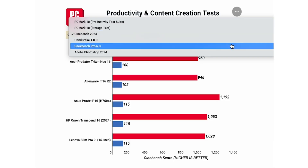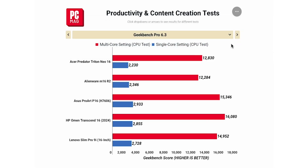Then we have Geekbench 6.3 Pro, another processor-focused test. It's a bit like PCMark10 in that it simulates a bunch of real-world applications, but here it's things like PDF rendering, speech recognition, and even machine learning. What's nice about Geekbench is that it's available for many different platforms, so we can easily compare Windows, macOS, and even Qualcomm Snapdragon ARM devices. Higher Geekbench scores indicate better performance, whether you're running a single-core task or a multi-core task, and we report both types.